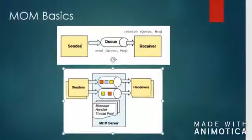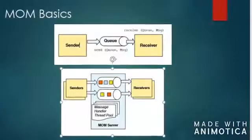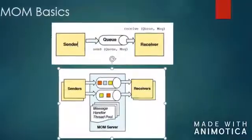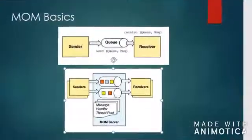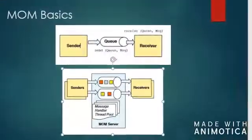When a receiver requests a message, the message at the head of the queue is delivered to the receiver, and upon successful receipt, the message is deleted from the queue.